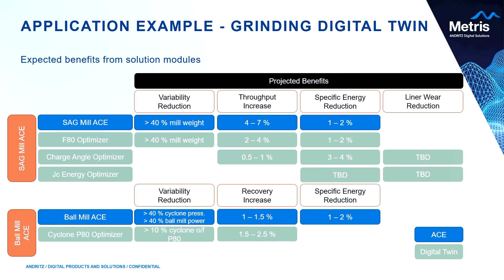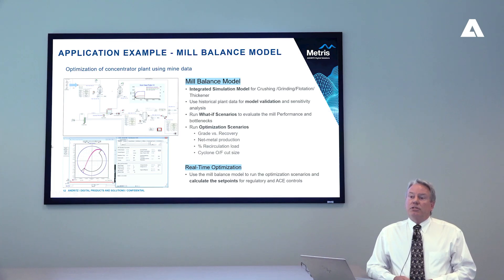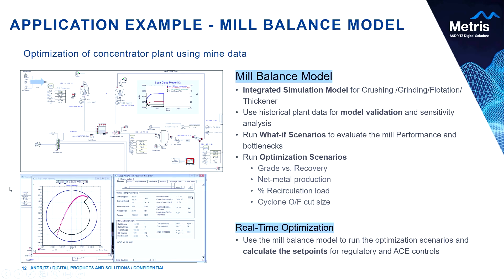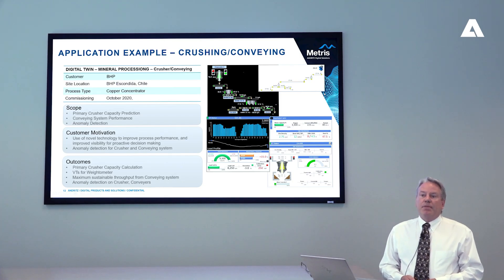The digital twin model for the grinding circuit can be extended to cover the entire mill, tracking mine-to-mill performance from crushing, grinding, flotation, to the thickener and tailings handling circuit. We can run what-if scenarios as ore information from the mine changes, determining the optimum compromise for grade versus recovery, net production, recirculation, and energy consumption. This example was done with BHP in Chile and was the subject of a published paper.